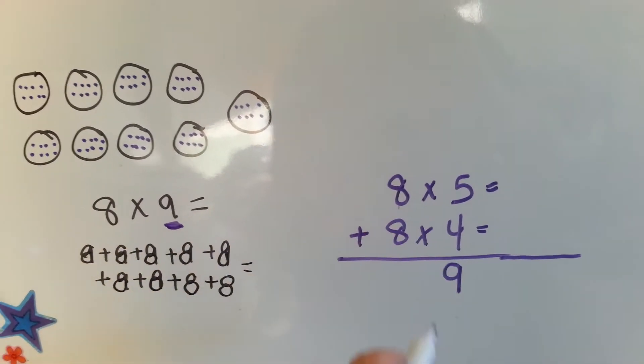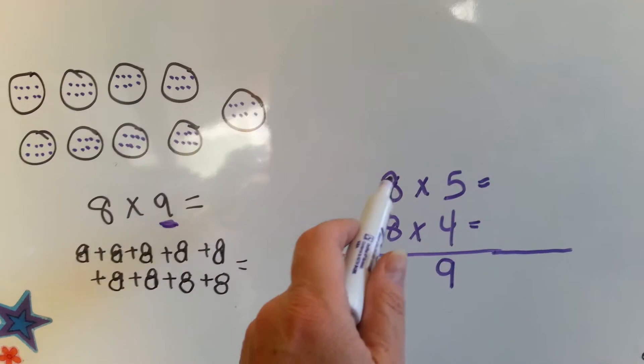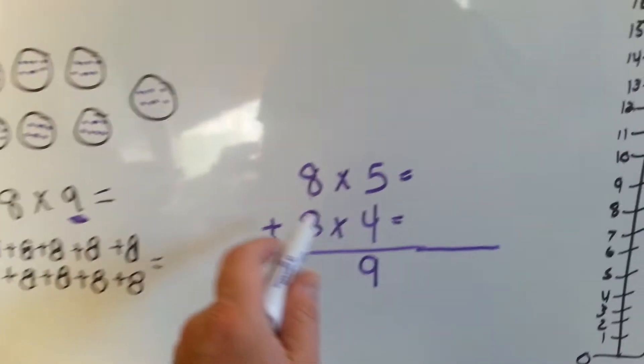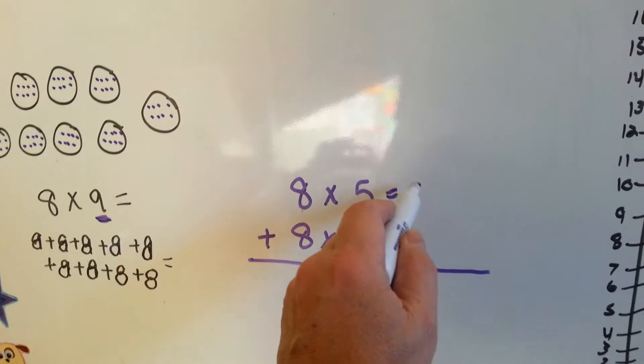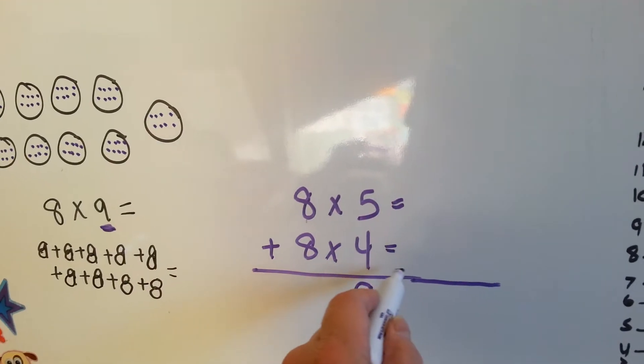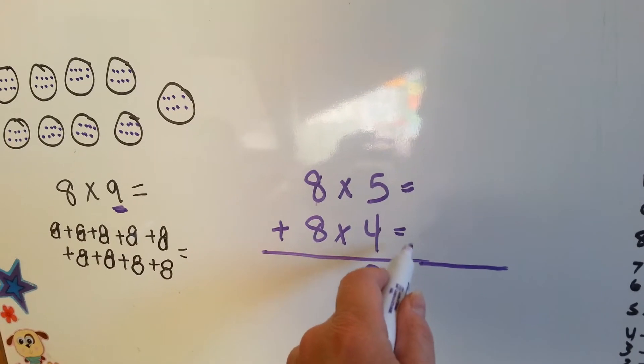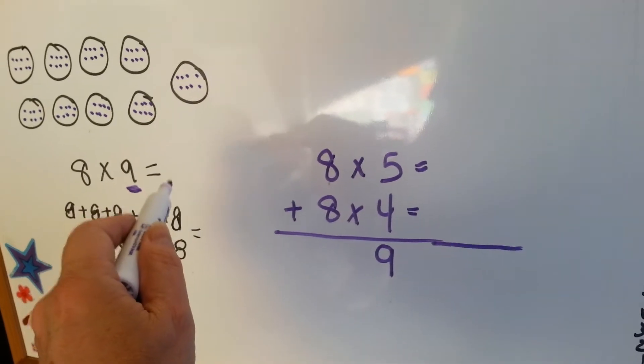Five plus four is nine. So we can say eight times five plus eight times four. Eight times five added to eight times four is going to be the same thing as eight times nine.